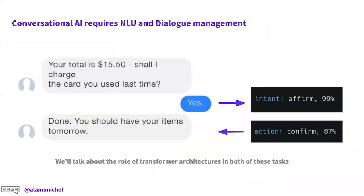That brings us to today's topics: NLU (language understanding) and dialogue management. This is the framework that Rasa works in — language understanding and dialogue are two separate pieces. The first task when you get a new message from a user is language understanding: classifying a free-form message like 'yes' into a structured intent such as 'affirm', plus extracting entities. The second piece is the dialogue manager: given this new information and everything I already know, what's the next best thing to do — ask for more info, make an API call, or complete the task?